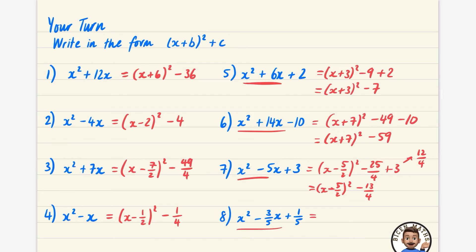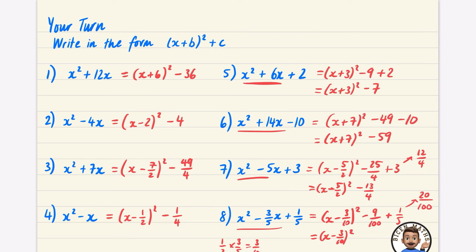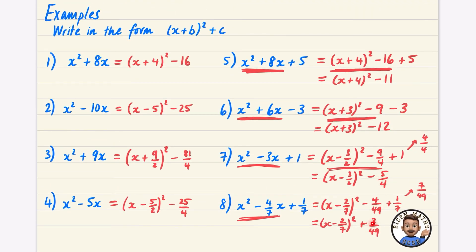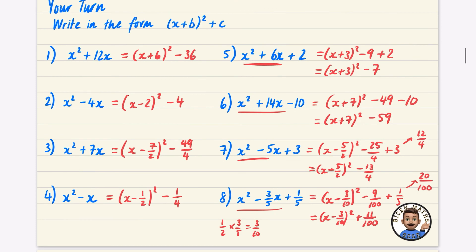For the last one, I complete the square on the beginning part. Half of 3/5 — that's 3/5 divided by 2 — is 3 tenths. So it's (x minus 3/10) squared minus 9 over 100, plus a fifth. A fifth is 20 over 100, so that gives (x minus 3/10) squared, minus 9 over 100 plus 20 over 100, which is plus 11 over 100. You'll notice I've always used fractions — I don't like decimals at this level of algebra, so get comfortable with fractions, especially if you're planning to do A-level maths.